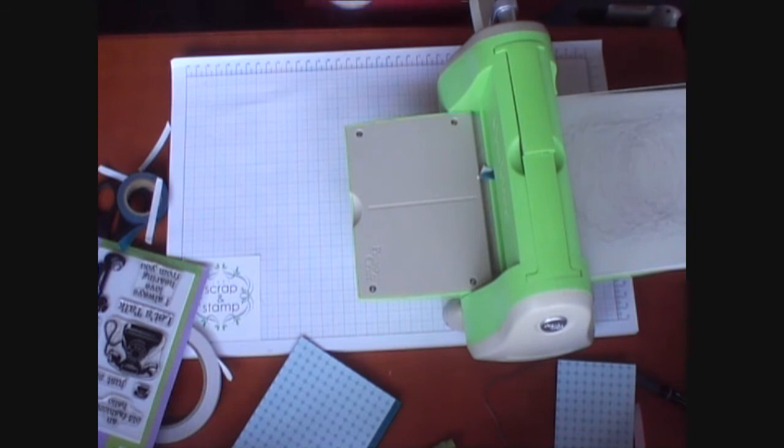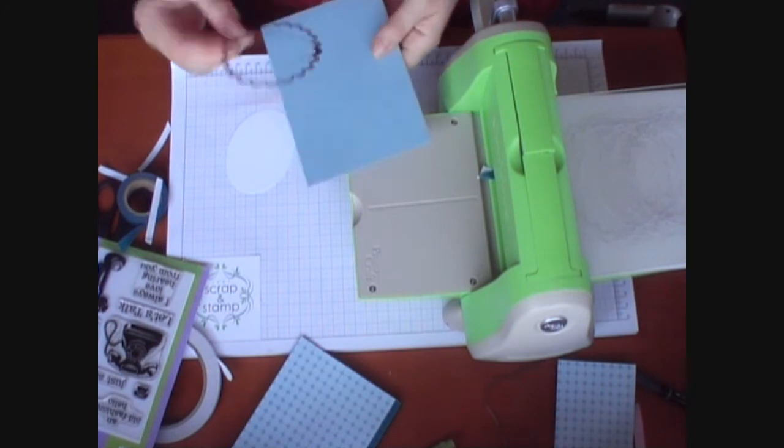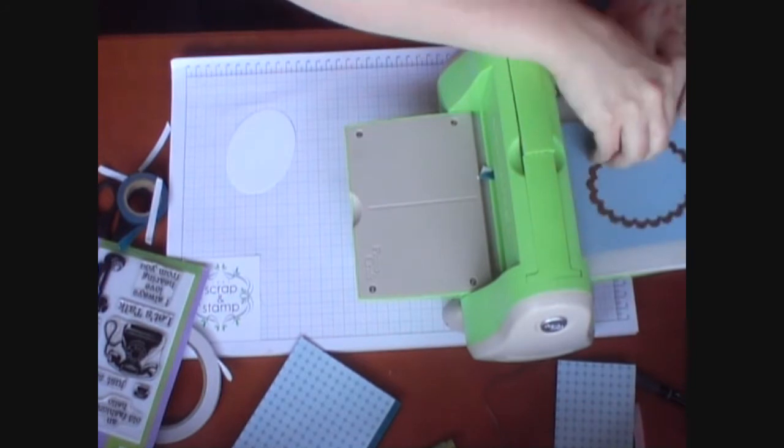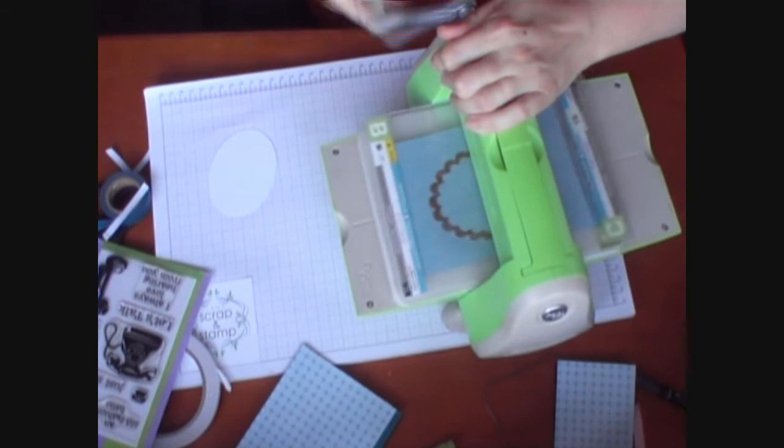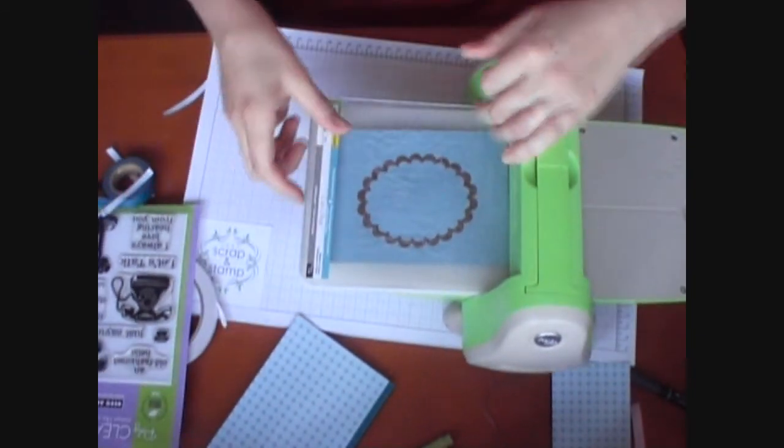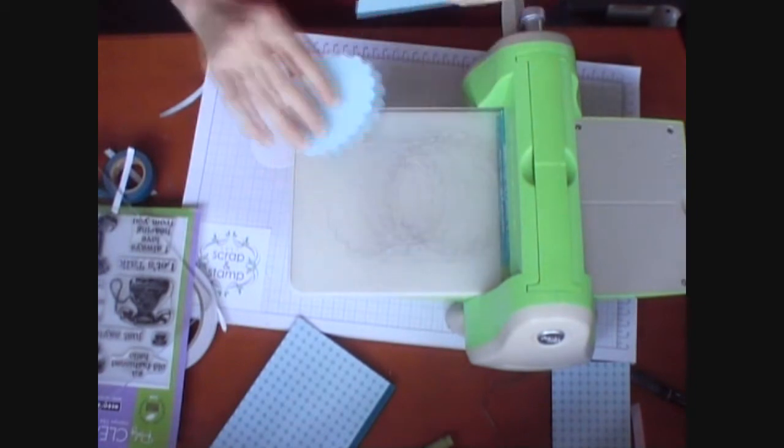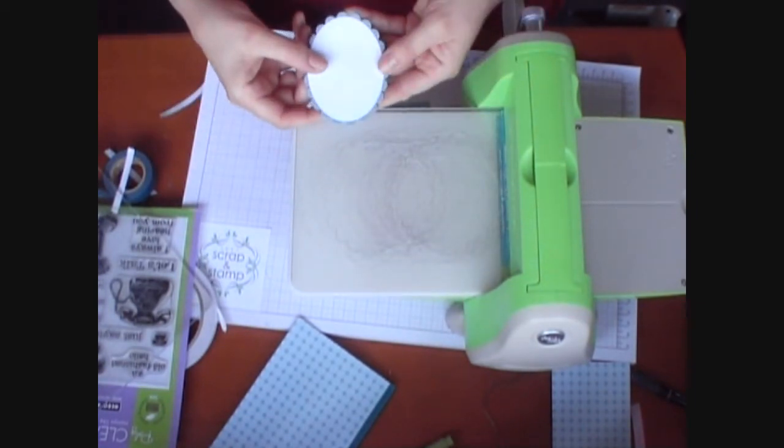That gives us our oval shape. And then to mount that on we've just got to do the same thing again but with the scalloped oval shape. So then we'll have our oval with our scalloped edge.